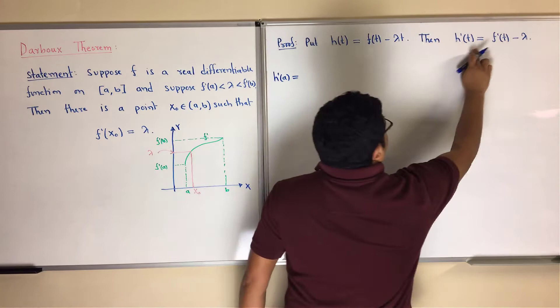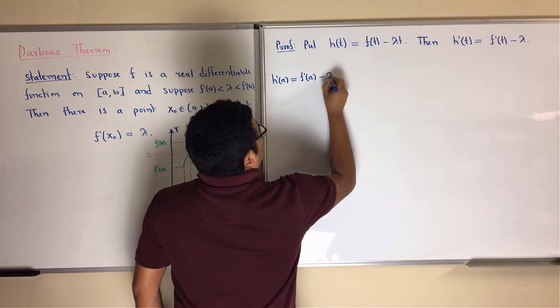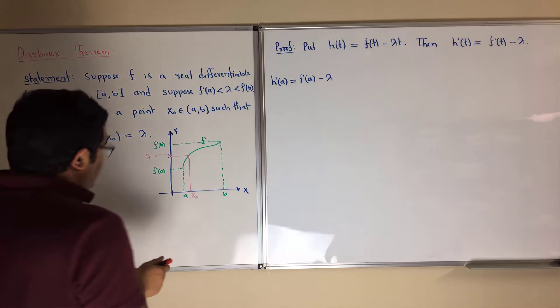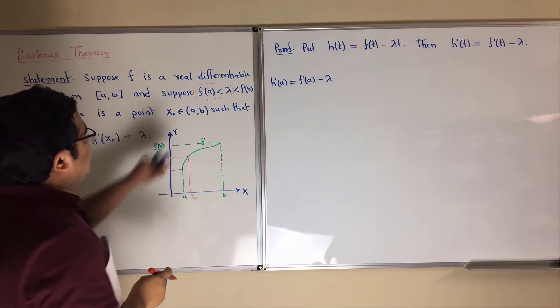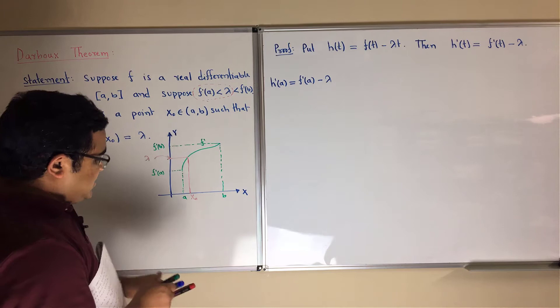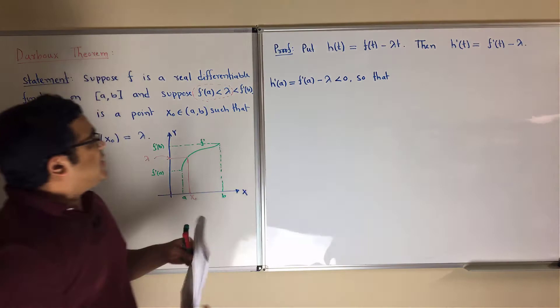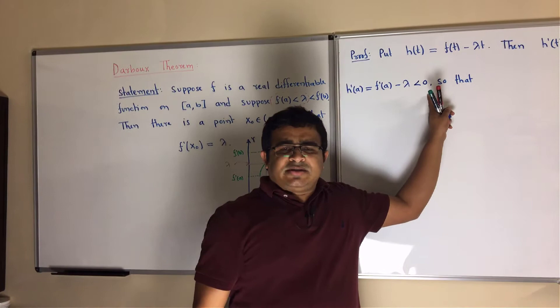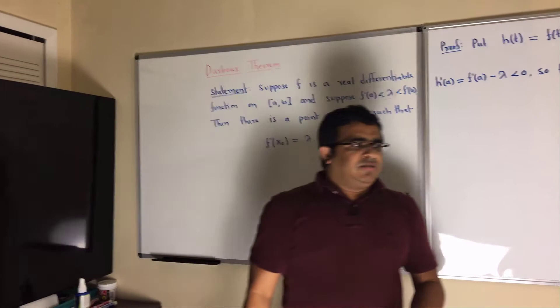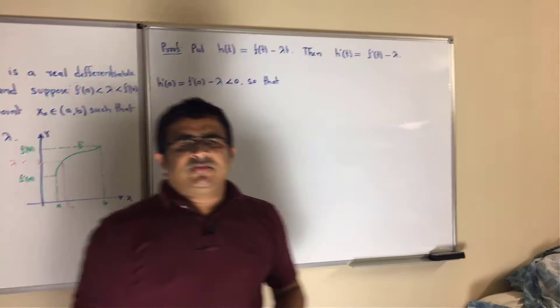At t equals a, h prime of a equals f prime of a minus lambda. From the given condition, f prime of a minus lambda is less than 0. This means the first derivative at a is less than 0, which means the function h is decreasing at x equals a.